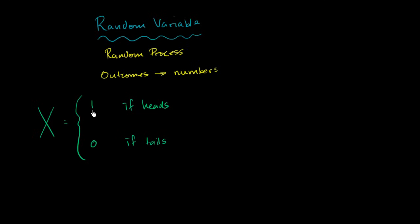I could have defined this any way I wanted to. This is actually a fairly typical way of defining a random variable, especially for a coin flip. But I could have defined this as 100 and I could have defined this as 703, and this would still be a legitimate random variable. Notice, we have taken this random process, flipping a coin, and we've mapped the outcomes of that random process and quantified them: 1 if heads, 0 if tails.